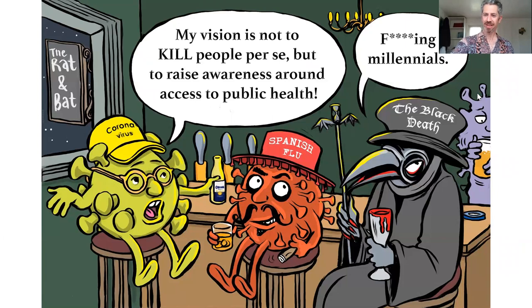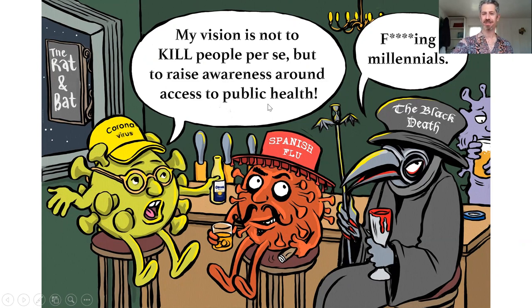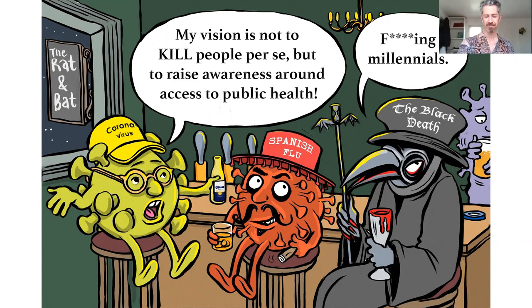Looking at this political cartoon, you see the coronavirus — the new millennial virus — alongside the Spanish flu and the Black Death. Coronavirus says its vision is not to kill per se, but to raise awareness around access to public health. The pub is called 'The Wrath and Bat' — because coronavirus came from bats, and the Black Death probably came from marmots, but could also have been transmitted by rats.